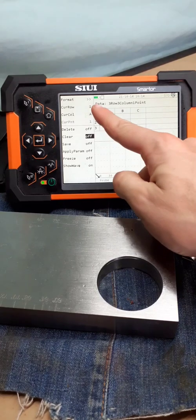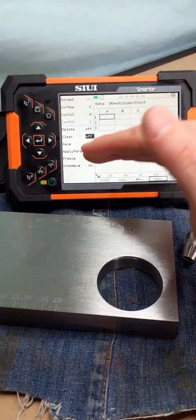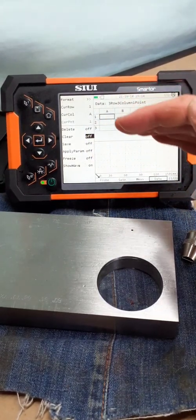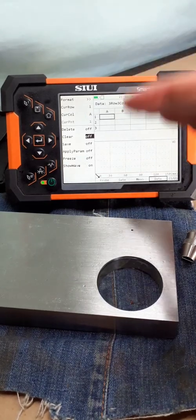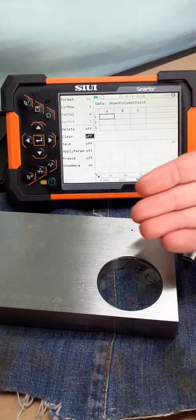So we've got our grid set up. It's going to be A, B, C columns, and we're going to have three rows, so a total of nine readings. Let's go through.